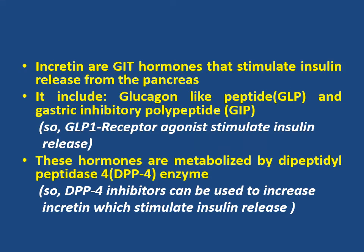What is incretin? Incretins are GIT hormones that stimulate insulin release from the pancreas. They include glucagon-like peptide and gastric inhibitory polypeptide. Glucagon-like peptide-1 receptor agonists will stimulate insulin release. These hormones are metabolized by dipeptidyl peptidase-4 enzyme, so dipeptidyl peptidase-4 inhibitors can be used to increase incretin levels, which stimulate insulin release.